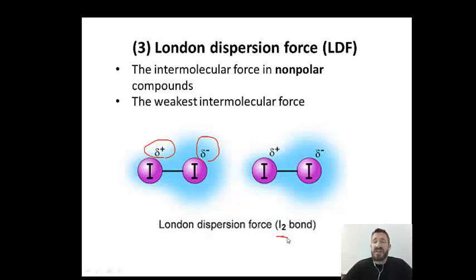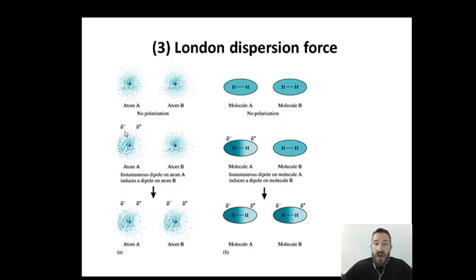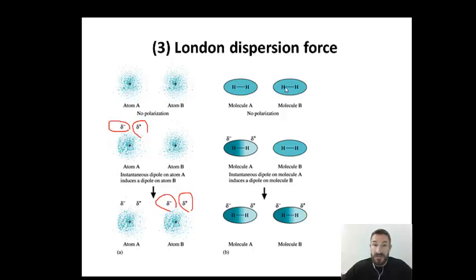London dispersion is the weakest type of intermolecular force when comparing the three. Here's an example: you have two nonpolar atoms, then one atom gets close to the other. All of a sudden you have a partial negative on one atom and a partial positive on the other, then that induces a dipole on the adjacent atom, and then both atoms have partial negative and partial positive charges. That's how a London dispersion force is created — it's only a temporary force.